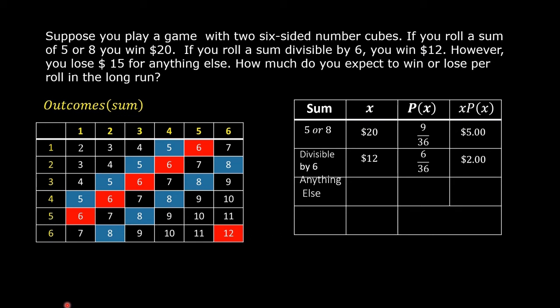Next, anything else. According to the problem, you lose $15 for anything else. So, the third value of x is negative $15, negative because you are going to lose $15 for anything else. Let us count all these sums: 1, 2, 3, 4, 5, 6, 7, 8, 9, 10, 11, 12, 13, 14, 15, 16, 17, 18, 19, 20, 21. So, 21 over 36. Multiply negative $15 by 21 over 36. The product is negative 8.75.